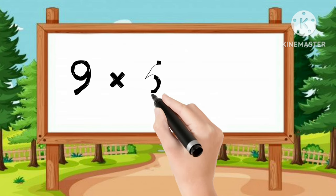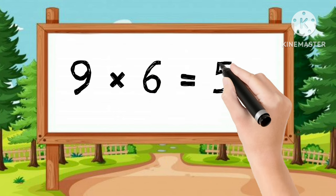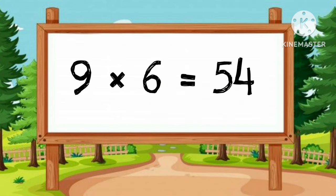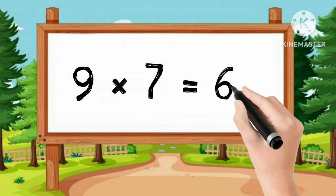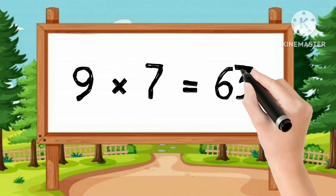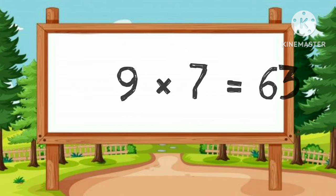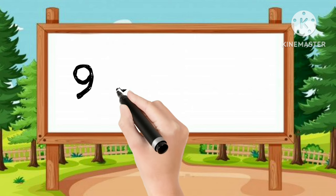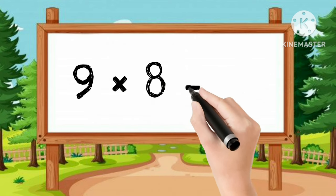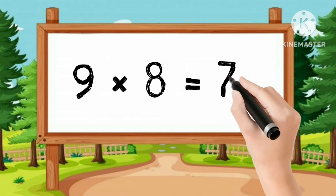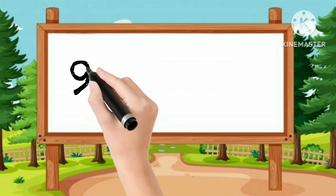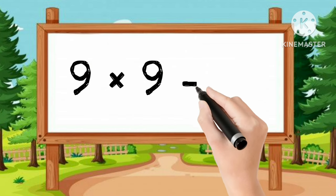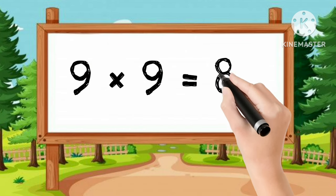9-6s are 54. 9-3s are 63. 9-3s are 72. 9-9s are 81.